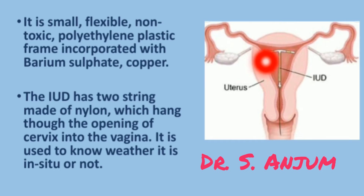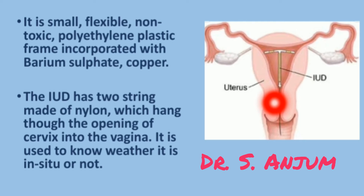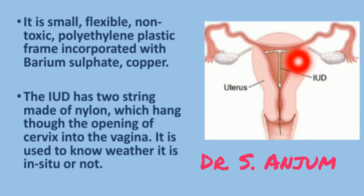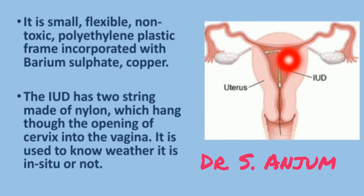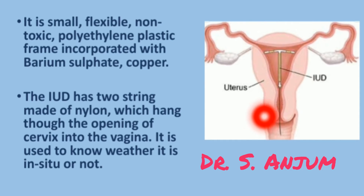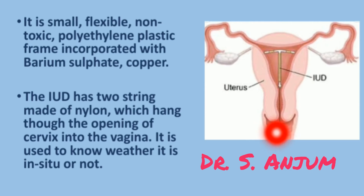You can see how it is placed inside the uterine cavity. It is placed by withdrawal technique with the help of a plunger. The horizontal limb lies in the upper part of the uterus and the vertical limb towards the cervix, and the nylon string or thread hangs into the vagina. The patient is instructed to check this thread regularly per vaginally.